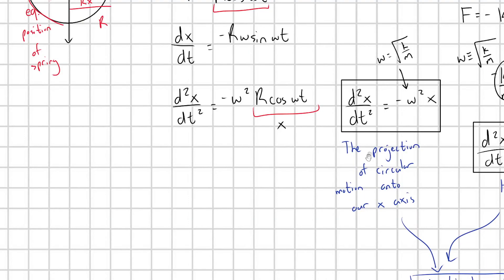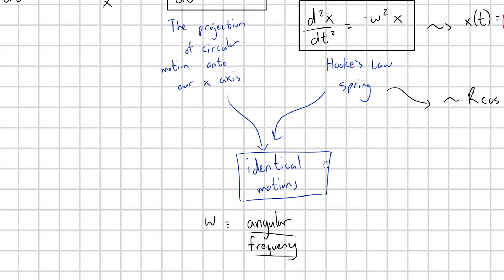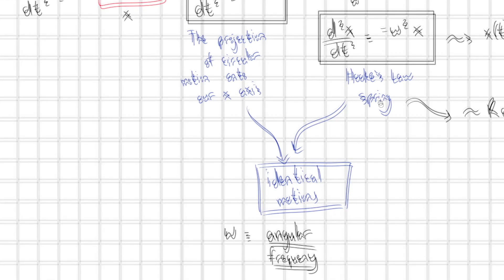So in light of this fact that the projection of this circular motion onto the x axis and the Hooke's law spring are more or less the same kinds of motion, we define the omega in the Hooke's law spring. This is defined as the angular frequency now, pointing out that it's angular in nature from the fact that this motion is connected to circles and that it's a projection of a circular motion.